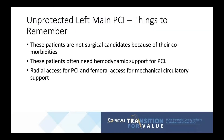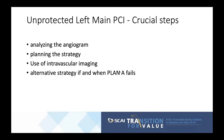During unprotected left main PCI, there are a few things to remember. These patients are not surgical candidates because of their coexisting comorbidities, and they often need hemodynamic support for the PCI. Radial access can be used for the PCI portion, while femoral access can be used for mechanical circulatory support. A crucial first step is analyzing the angiogram — anatomy dictates the strategy.